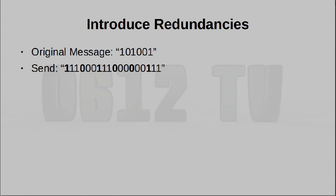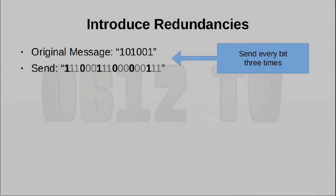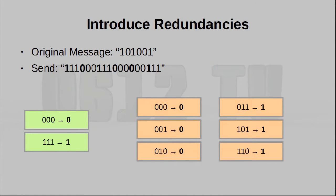First and foremost, the easiest way for you to guard yourself against bit loss or corruption is to simply create redundancy. If I were to send every bit three times over the wire, chances are some of it is going to come out correct. We can then take the average of all the redundancy and therefore have some confidence that the value we have resolved is correct.